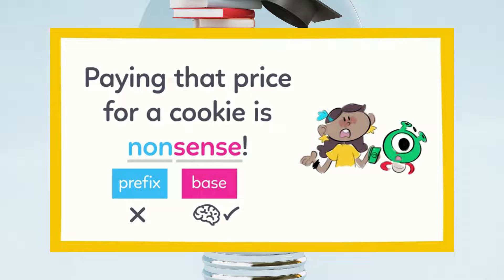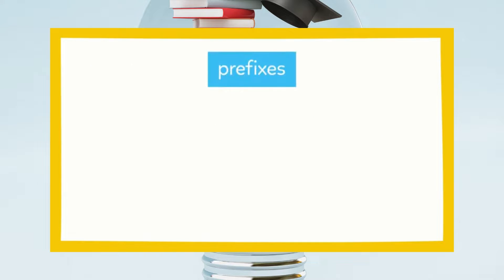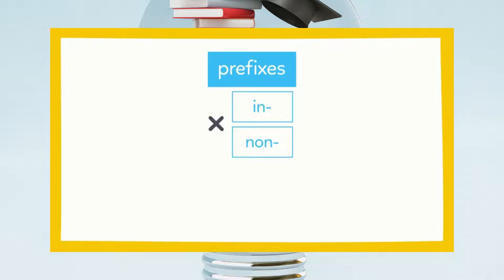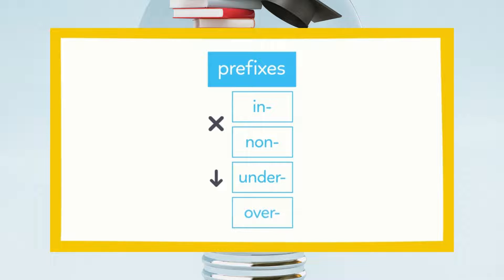Let's practice defining words with prefixes together while we finish our story. Remember that in and non mean not. Under means below or not enough. And over means too much.